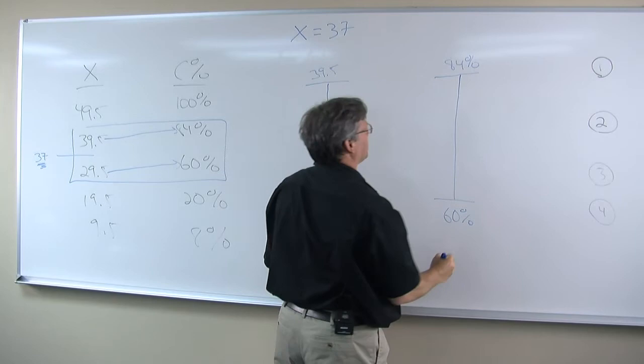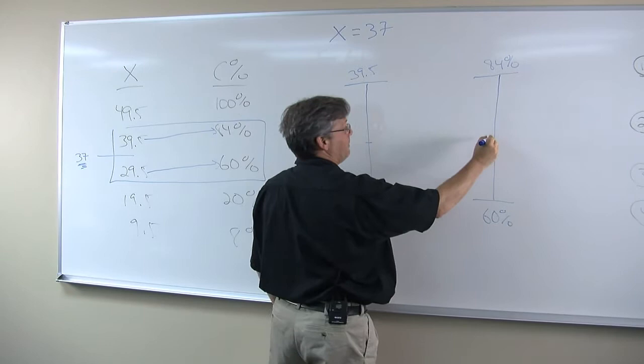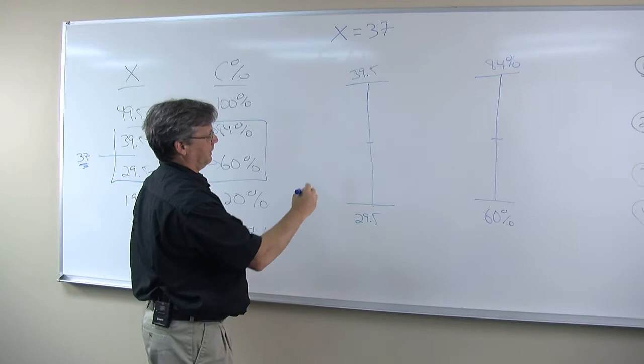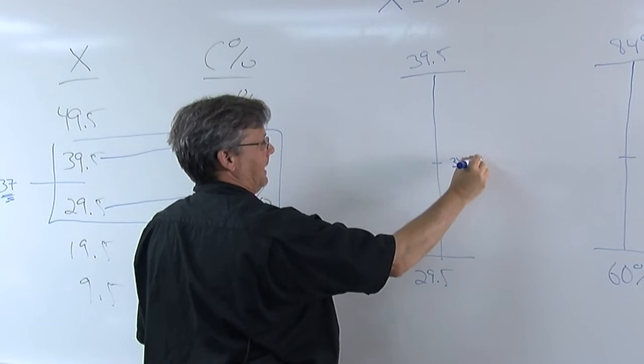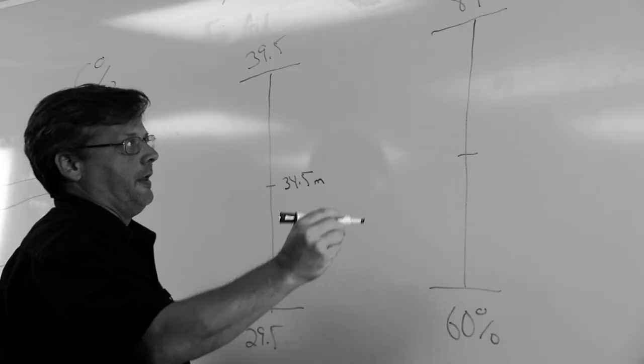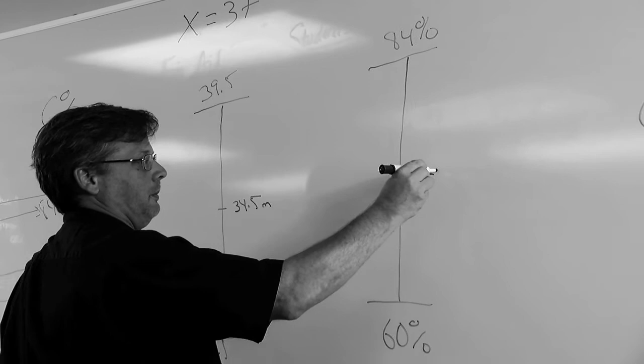So on the first scale, for the X-scores, we're going to have a midway point of 34.5. And I like to put a little M here so that we don't get it confused with our intermediate value. Then on the second scale, the midway point is 72%.